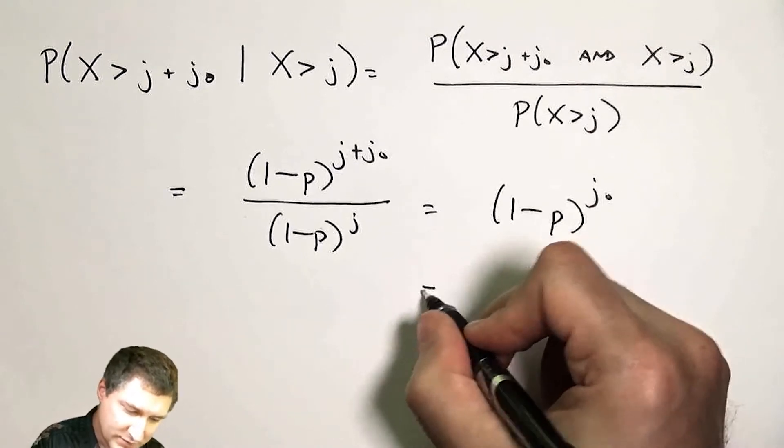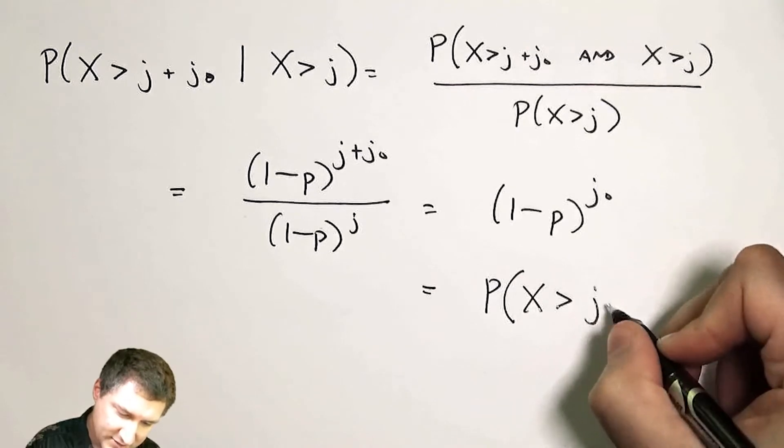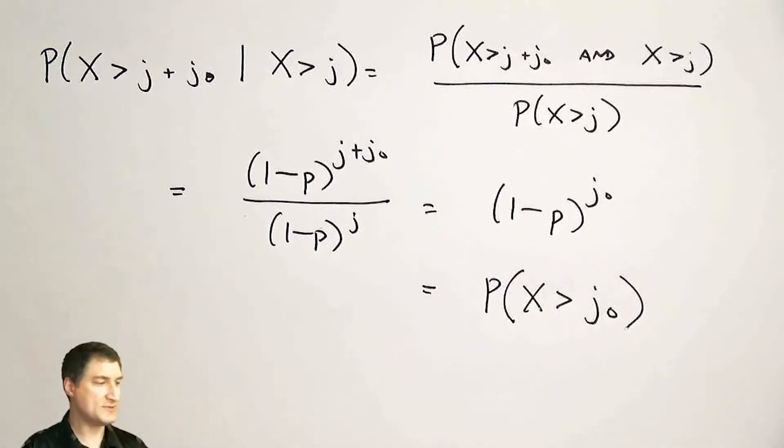Why is this interesting? Well, this is actually very much, this is exactly the same as the probability of x being greater than j0. And so this is the intuition.